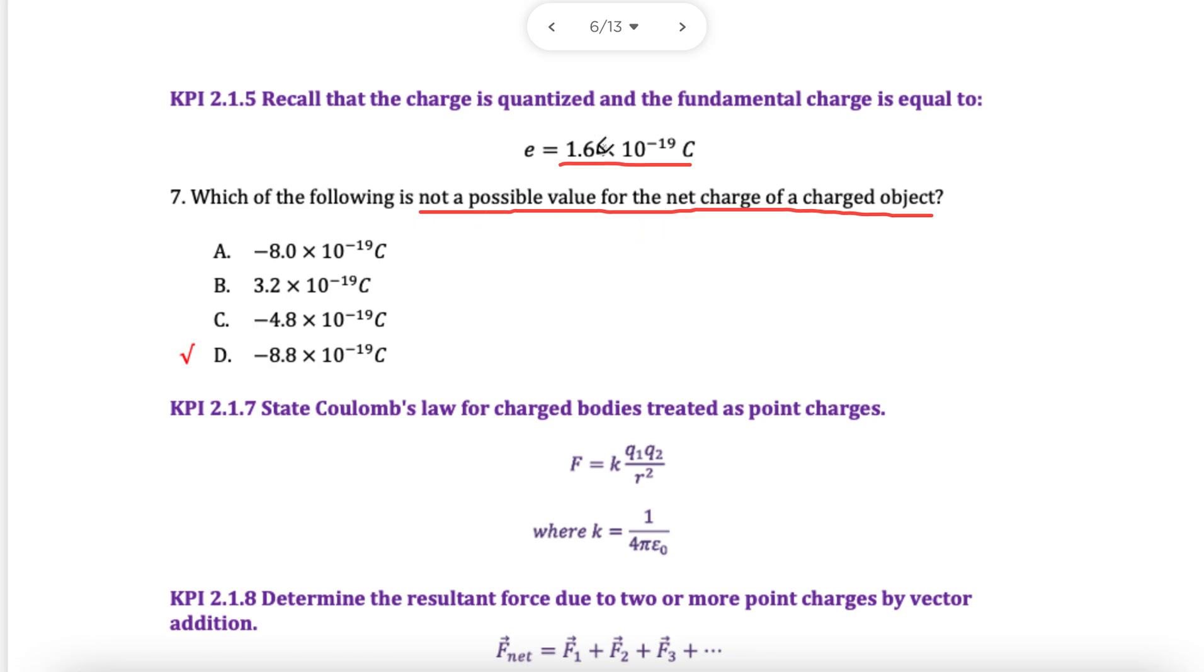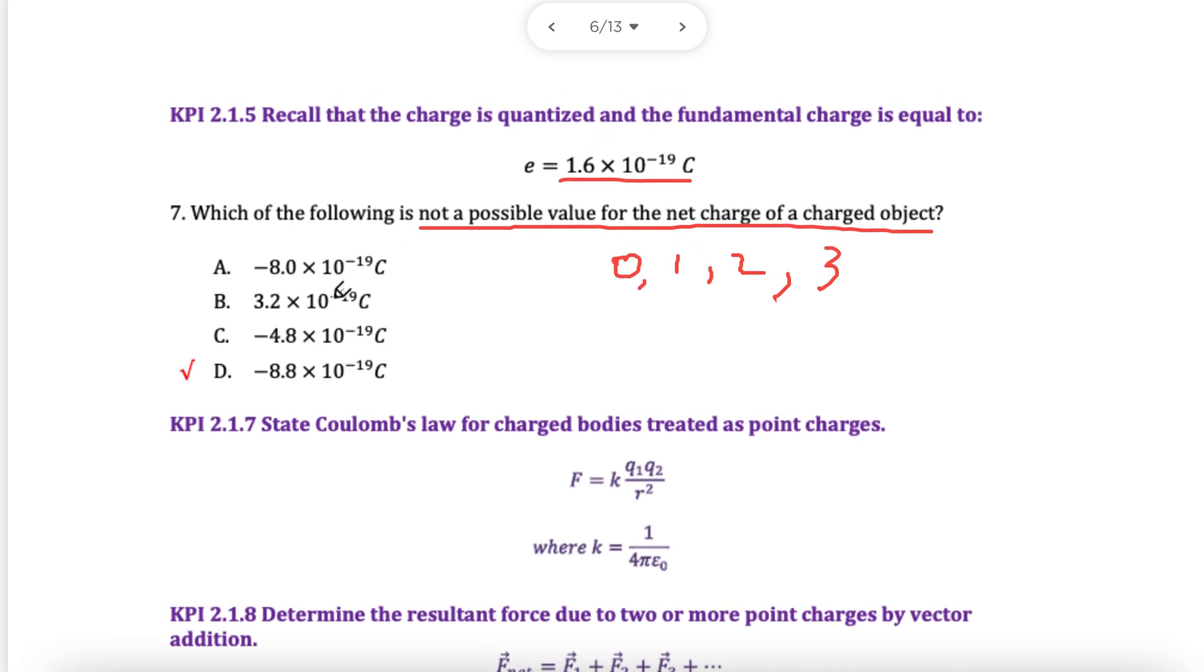The idea here is that the charge of a single electron is 1.6. You can either have zero electrons, one electron, or two electrons, or three electrons, nothing in between. You cannot have half an electron, a quarter of an electron. It's not possible. So that means I know that if I take one electron, I will have 1.6. If I take two electrons, I will have two times 1.6, 3.2, which is right here. That's actually correct. We want that's not possible. So this is a good answer. The idea is you keep going.